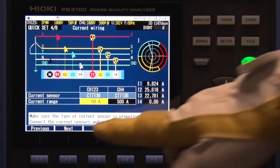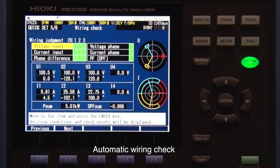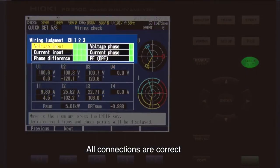The PQ3100 automatically checks for correct wiring and warns you if there is an error. This shows that all connections are correct.